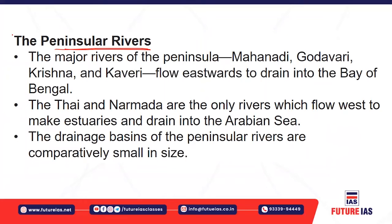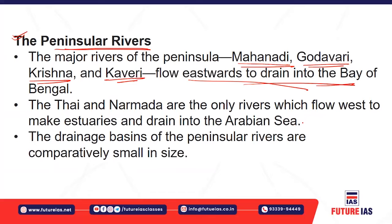The peninsular rivers are non-perennial — their regime is not perennial, they only flow during the rainy season, are mainly rain-fed, and are not navigable. The major rivers that flow eastward — Mahanadi, Godavari, Krishna, and Kaveri — originate from the Western Ghats and drain into the Bay of Bengal.